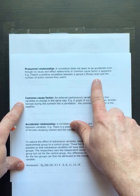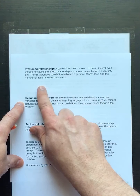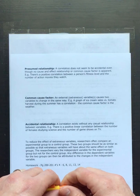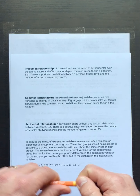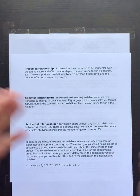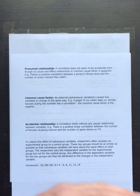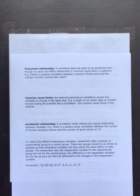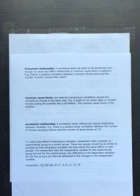The textbook example of a presumed relationship is a positive correlation between a person's fitness level and the number of action movies they watch. Being physically fit doesn't cause you to love action movies — working out doesn't mean you prefer action movies over romantic comedies or horror. There's no direct causality; it's just a presumption.